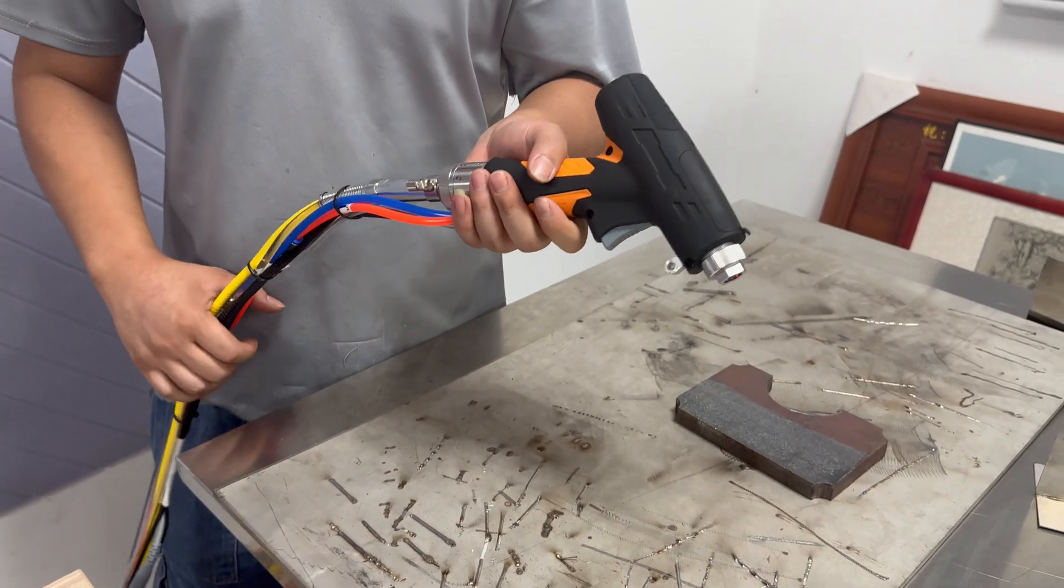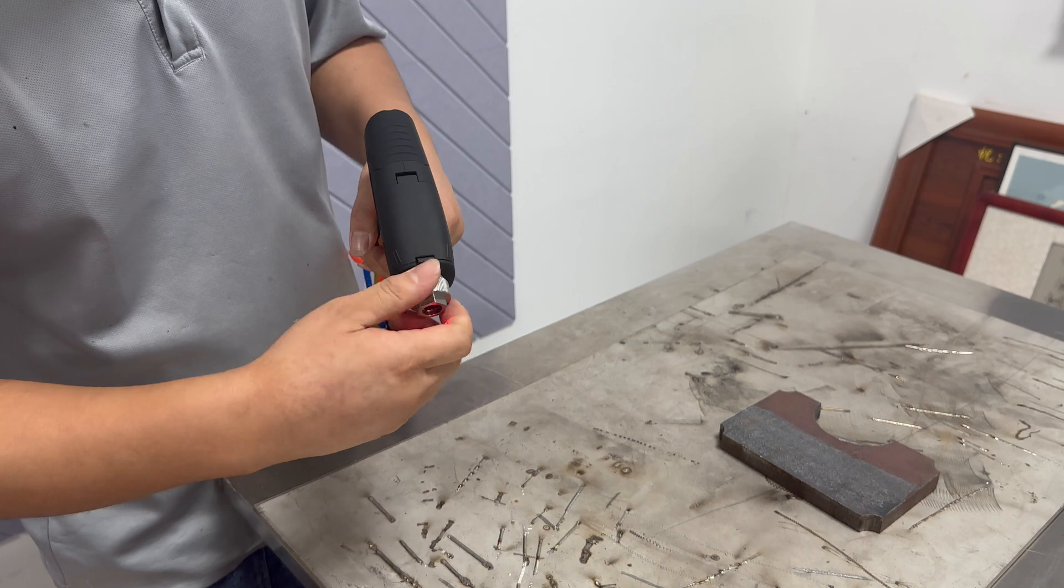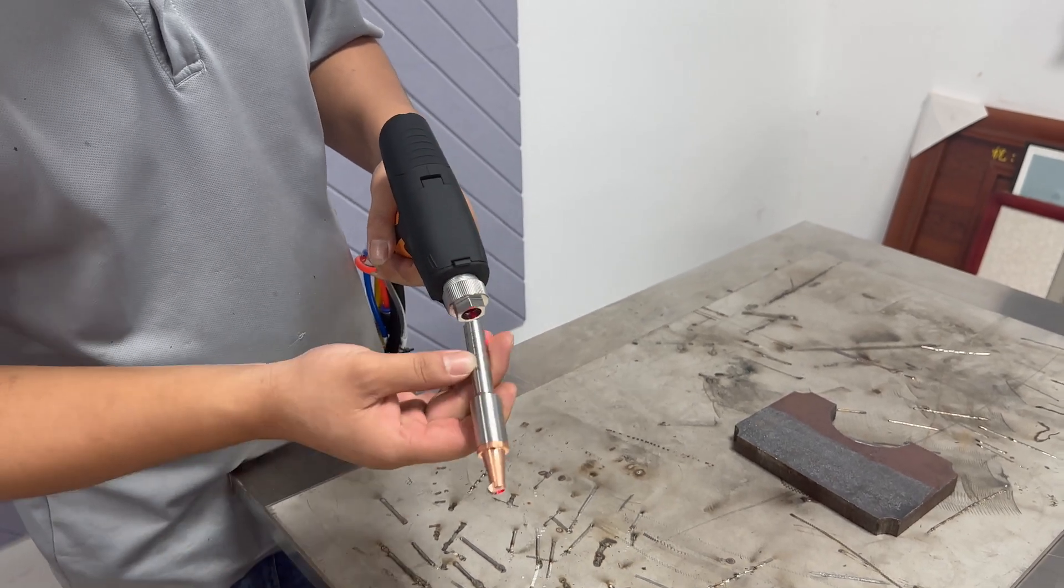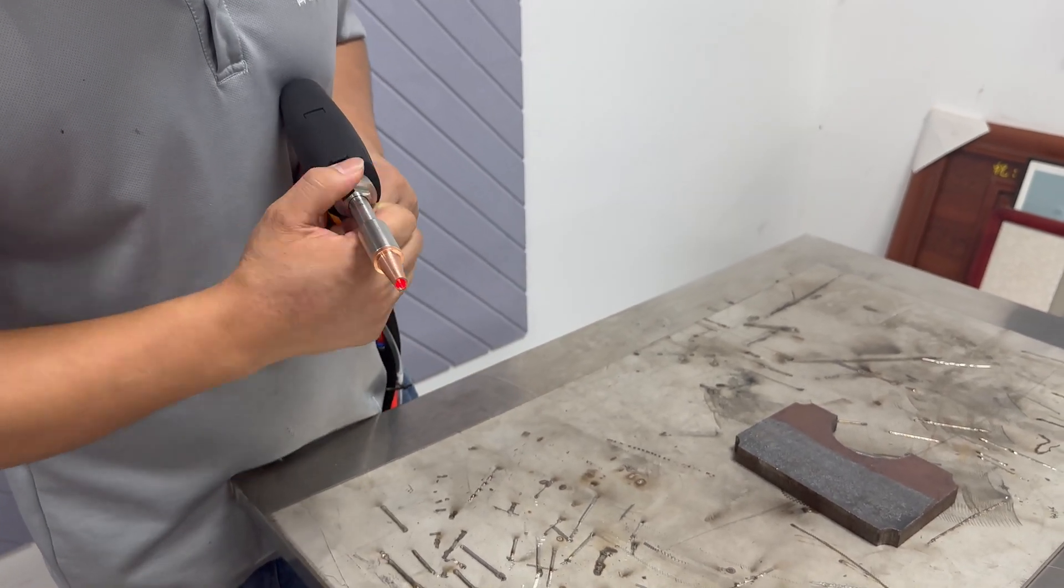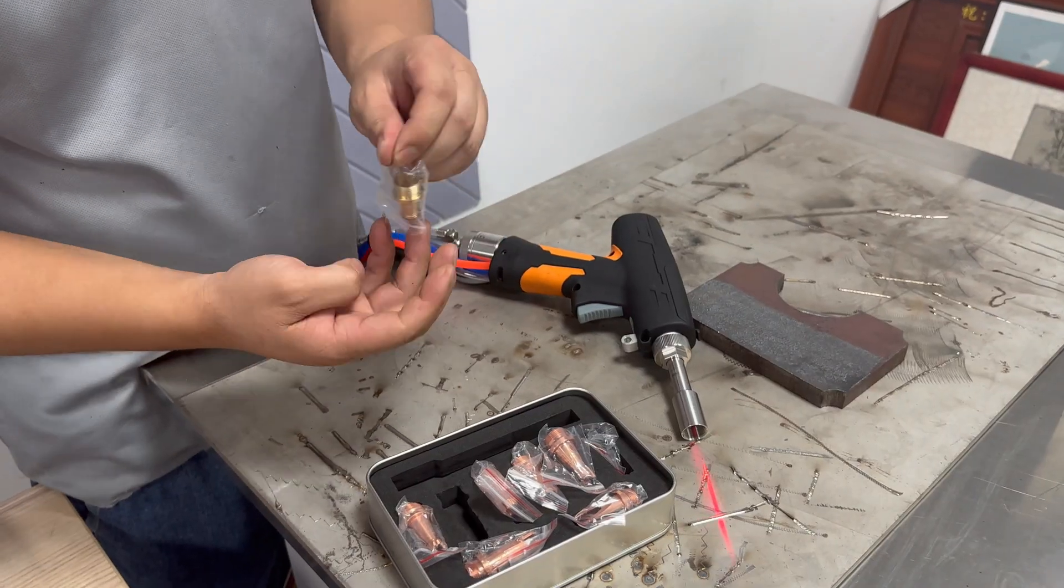Next we demonstrate the cutting function. Put our measuring tube back on, remove this hook nozzle and replace it with the cutting nozzle.